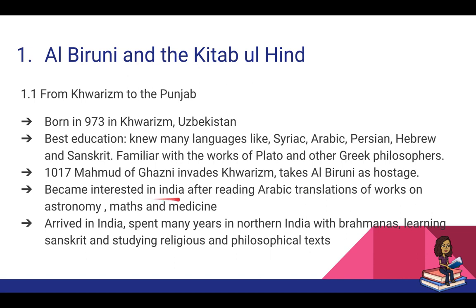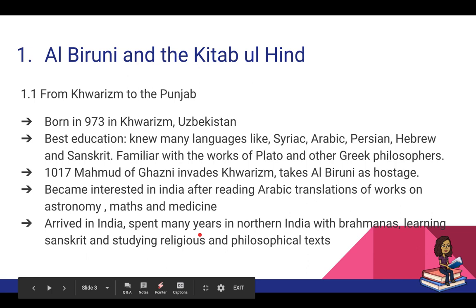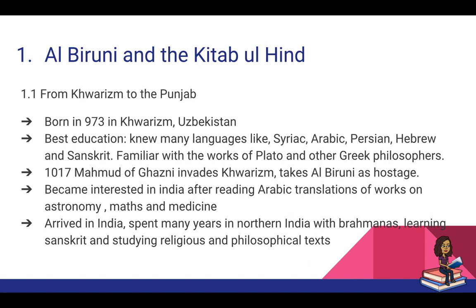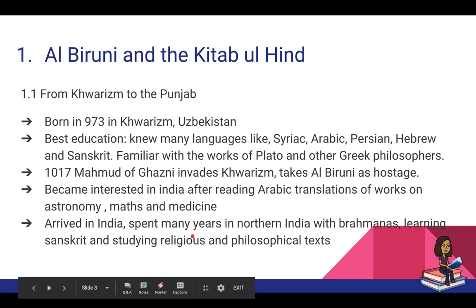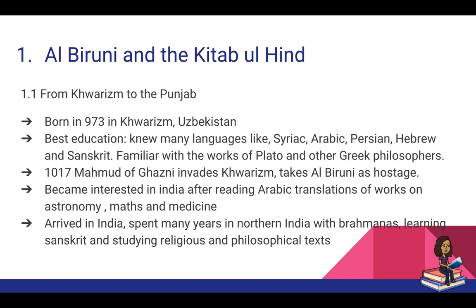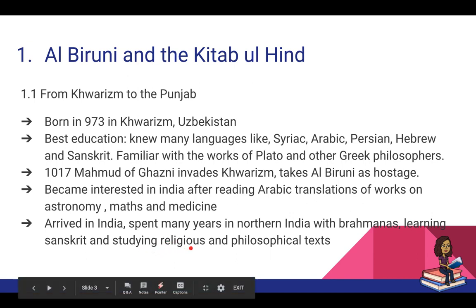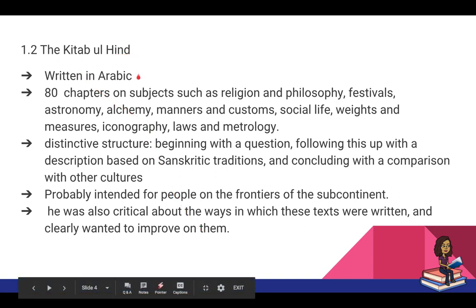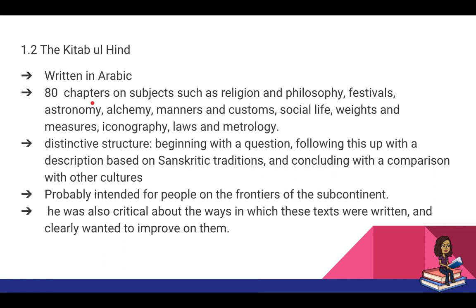It was while in Ghazni that Al-Biruni became interested in India after reading Arabic translations of works on astronomy, mathematics, and medicine. He then sought and was granted permission by Mahmud of Ghazni to stay on in India when he arrived with one of Mahmud's forays. He came here on many such occasions, studying various religions, philosophical texts, and scientific and mathematical texts. The Kitab-ul-Hind is written in Arabic and has 80 chapters on subjects such as religion, philosophy, festivals, astronomy, alchemy, manners and customs, social life, weights and measures, iconography, laws, and metrology.